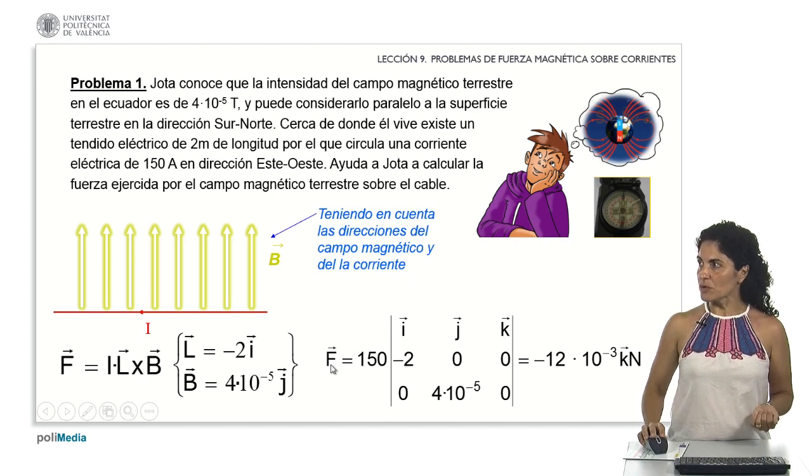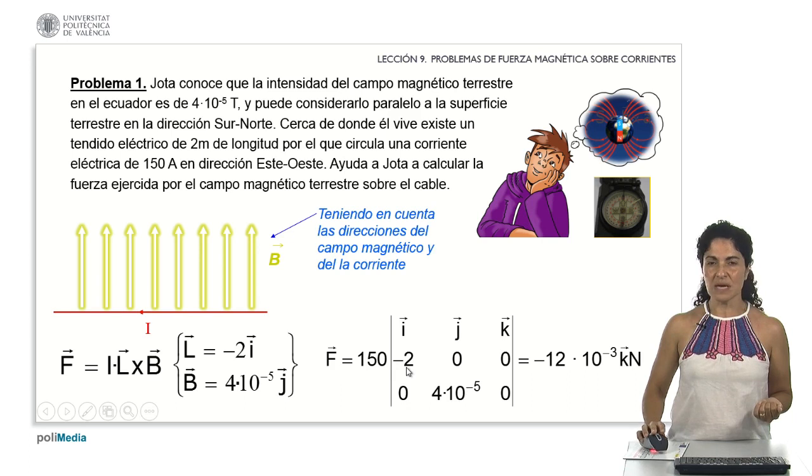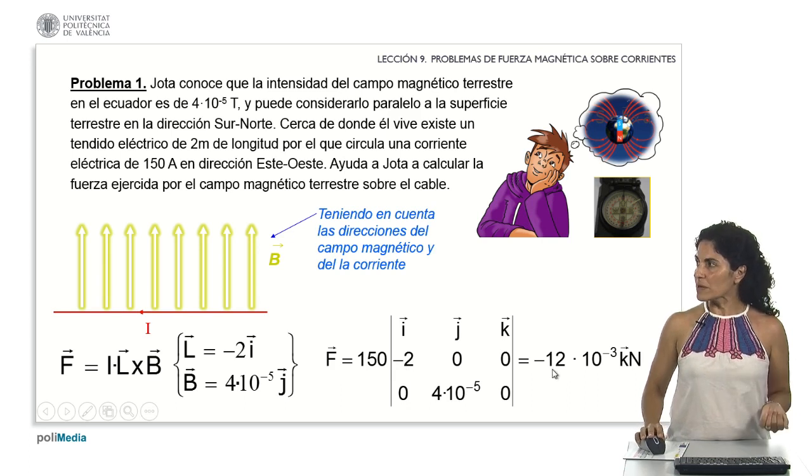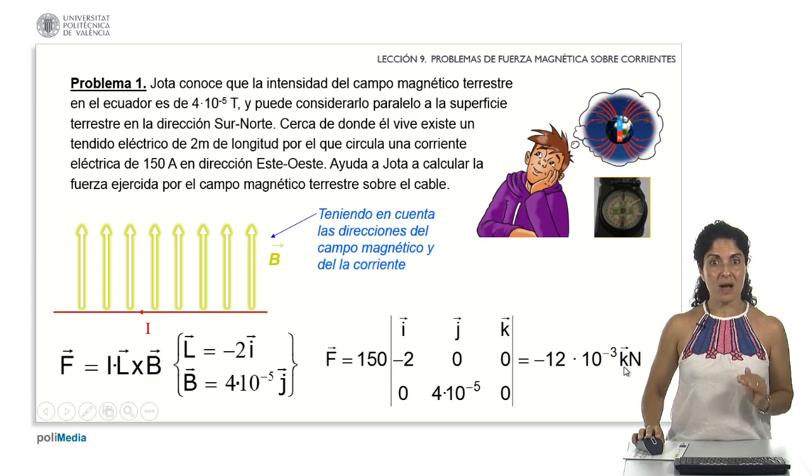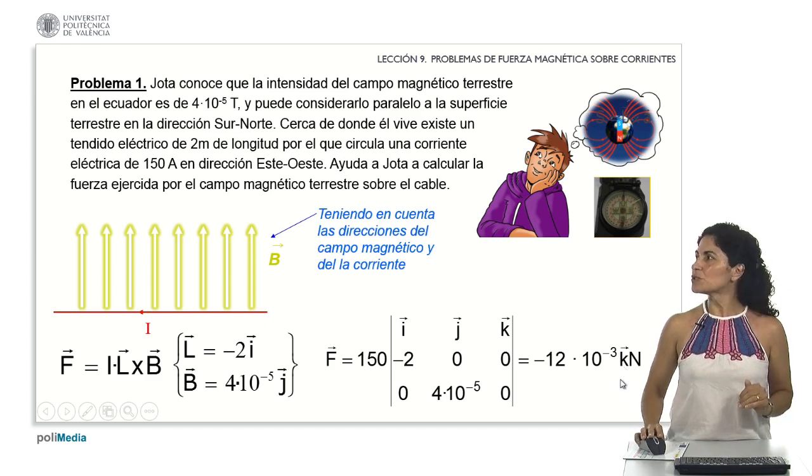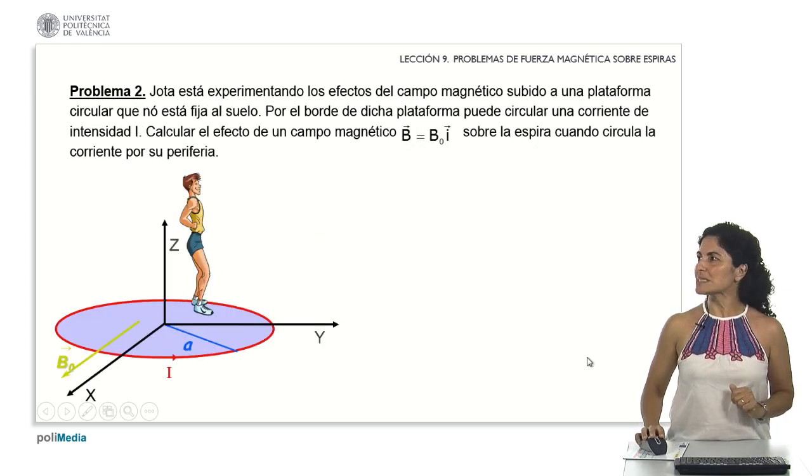Employing this vector product, the magnetic force vector can be determined promptly, resulting in a magnetic force of negative 12 times 10 to the power of minus 3 along the unit vector K in Newtons.